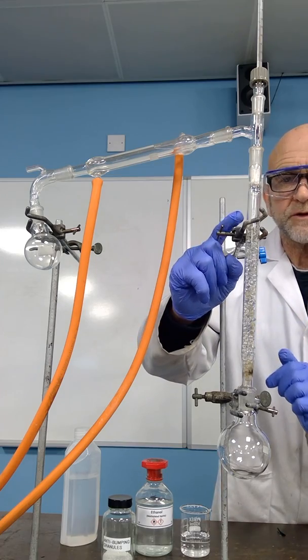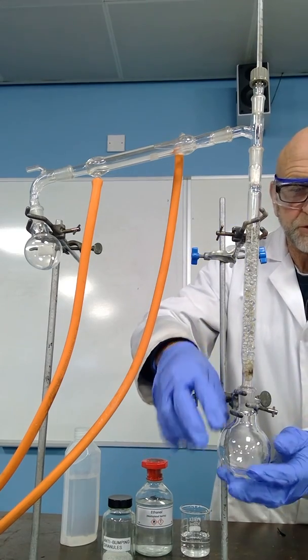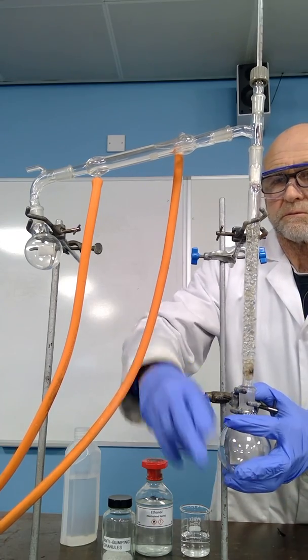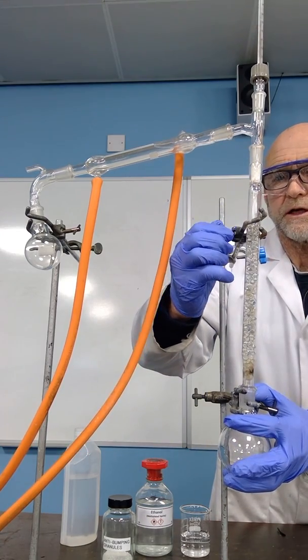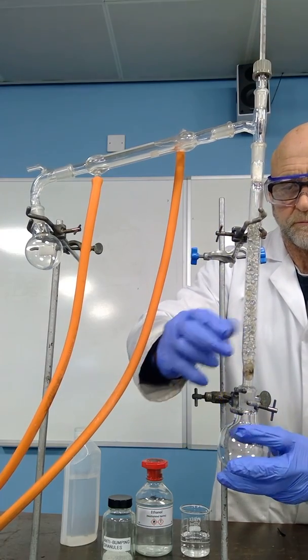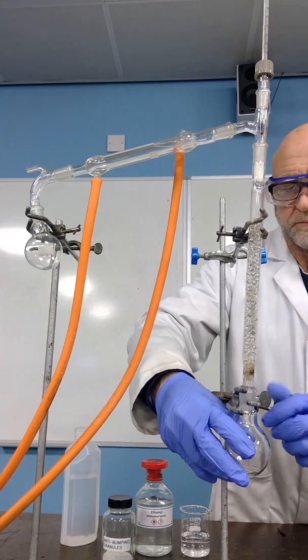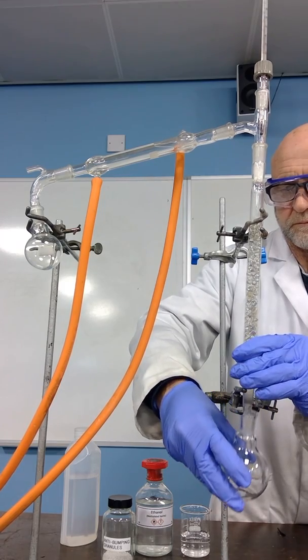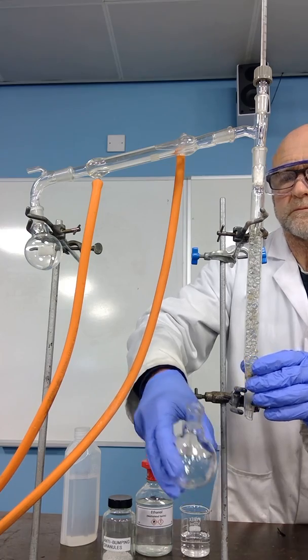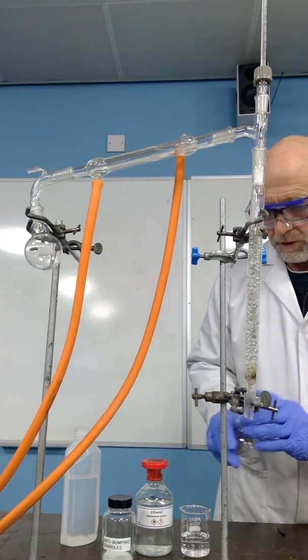I have clamped at this point, which is not actually necessary, so that I'm able to take off the round bottom flask and securely clamp the round bottom flask at the bottom. I'll just double check on that connection.